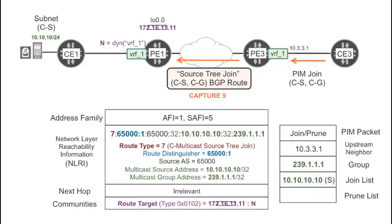First, the router ID of PE1. Why PE1? Well, from the perspective of PE3 and in the context of VRF1, PE1 is the unicast next hop towards the multicast source. PIM has a similar mechanism to achieve this: the upstream neighbor field set in the PIM join packets.